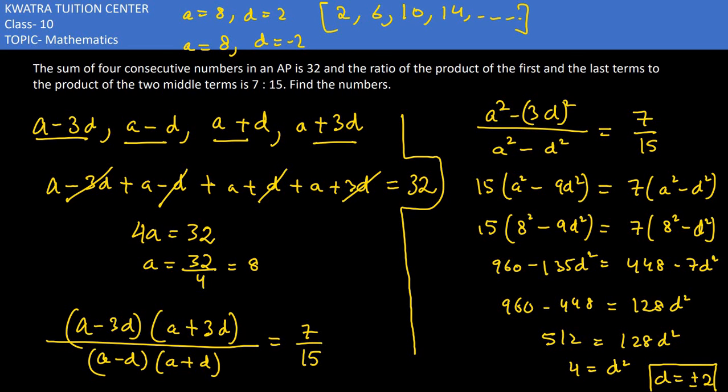If d would be minus 2, our values are a minus 3d is equal to 14, then 10, then 6, then 2. So that is the solution for the third one.